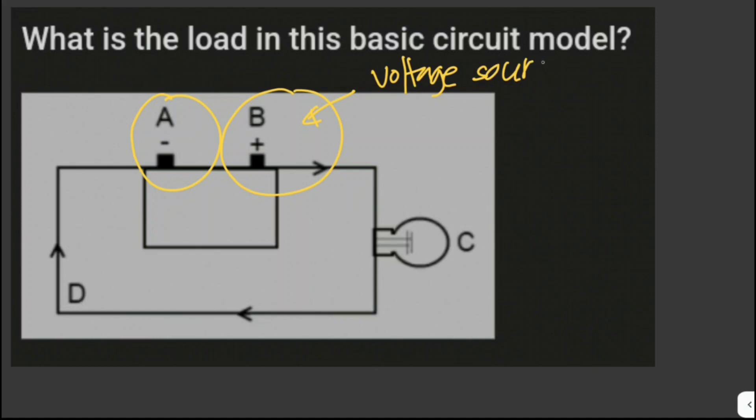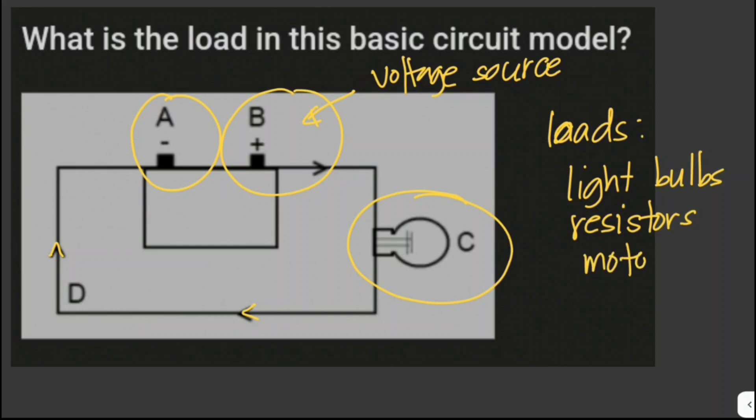We also have our load and conductors. The conductors here are drawn using the lines and arrows. The load in this model is the light bulb at point C, because light bulbs is one of the examples of loads. Loads can be light bulbs, resistors, and motors. So the answer here is this one.